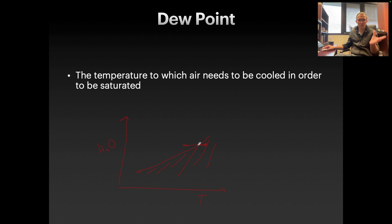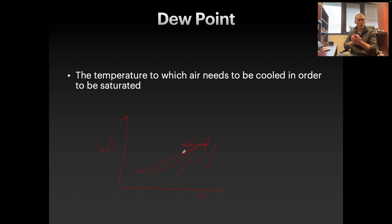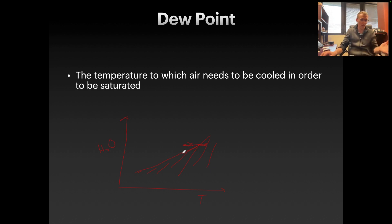Our dew point is the temperature at which air needs to be cooled in order to be saturated. We can't cross that line because the air can't hold that much water vapor at that lower temperature. What happens to all that water vapor when the temperature cools down? It condenses out as dew, fog, or clouds — all results of the same process. Air cooling down gets too much moisture in it, and the water vapor precipitates out as liquid water, tiny water droplets.